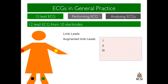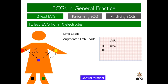There are three augmented limb leads. They are formed by the creation of a central terminal, a confluence of two of the limb electrodes, and this is the negative electrode in the lead. AVR represents the electrical conductance between the central terminal and the right arm, which in this case is positive. AVL represents the conductance between the central terminal and the left arm. And AVF, roughly 90 degrees inferior, represents the conductance between the left leg electrode and the central terminal.